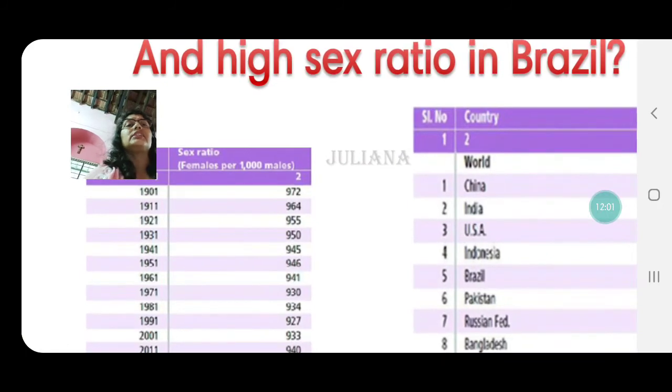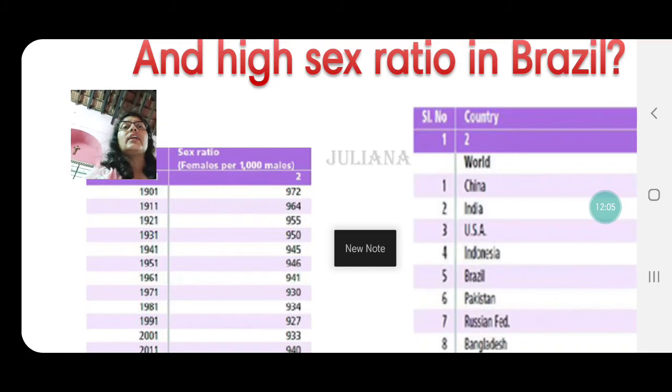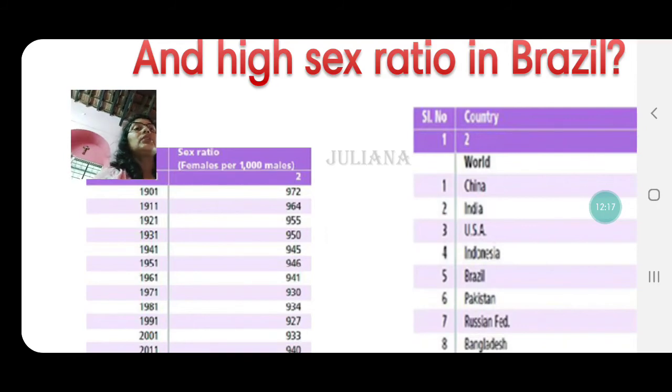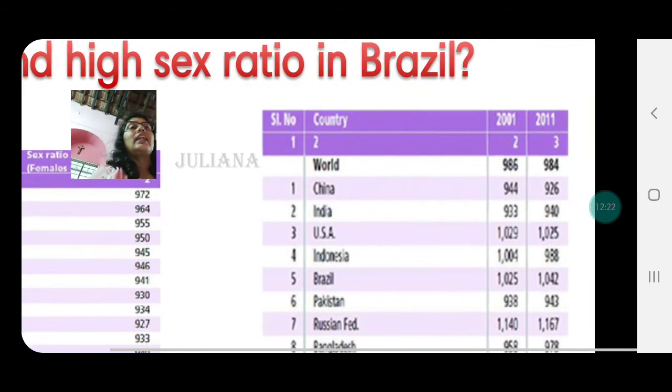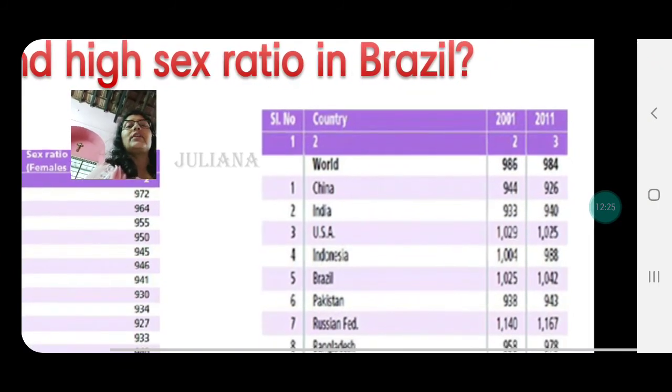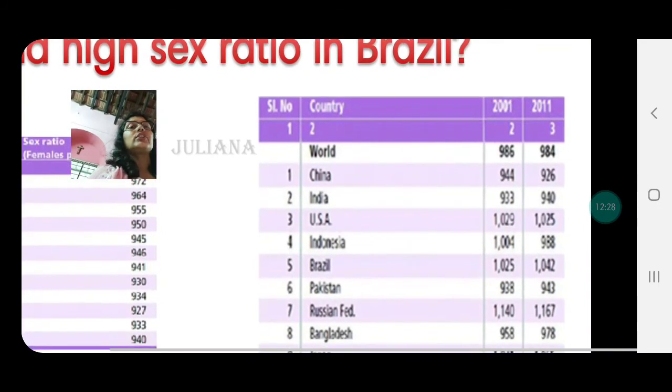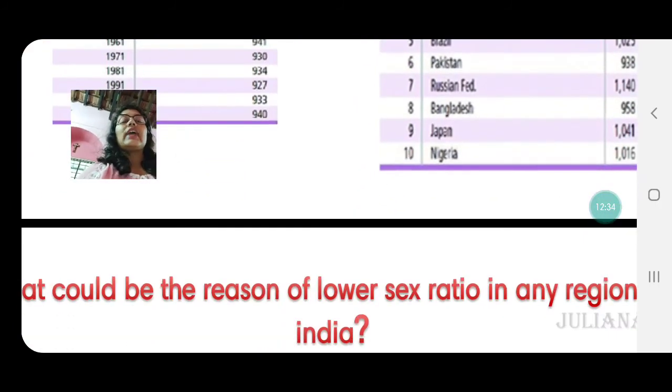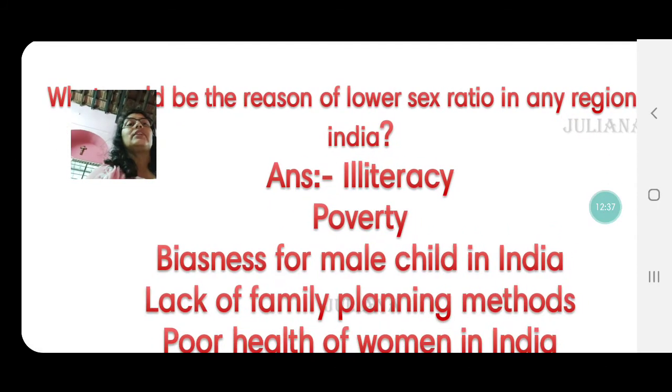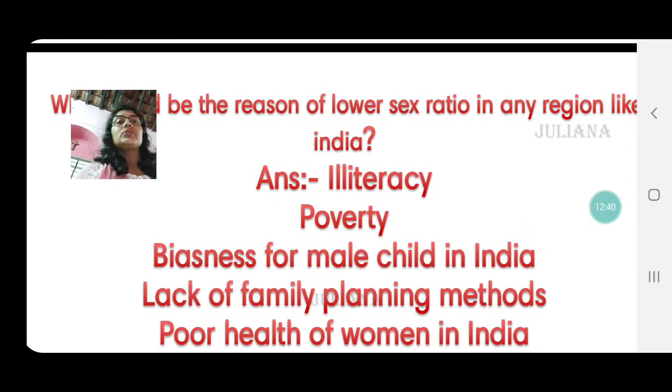These are some of the figures of different years in India. In 1901 it was 972, quite good. 1911, 964, quite good. Then we find a decreasing trend. Remember till 1941 almost there were Britishers in India also. And what about the world? Talking about world, this is the ratio of 2011: 984 for the world, China 926 females which is low again, India 940, USA 1000. The remaining countries always have higher female ratio. Developed nations have more of female ratio. What could be the reason?